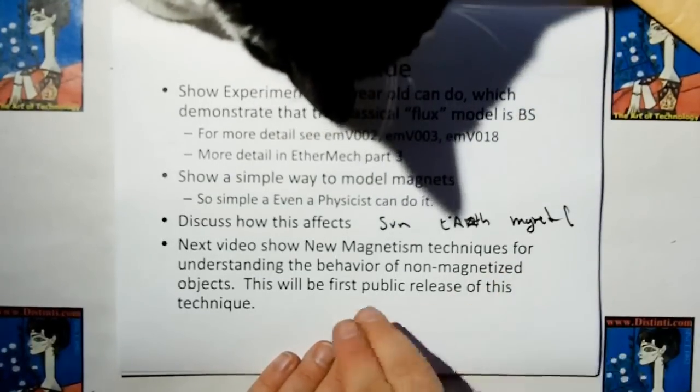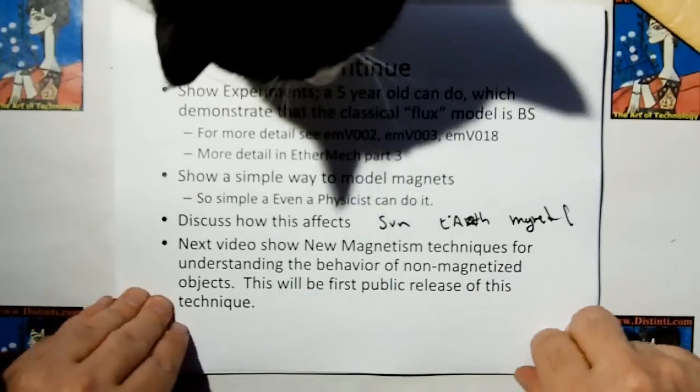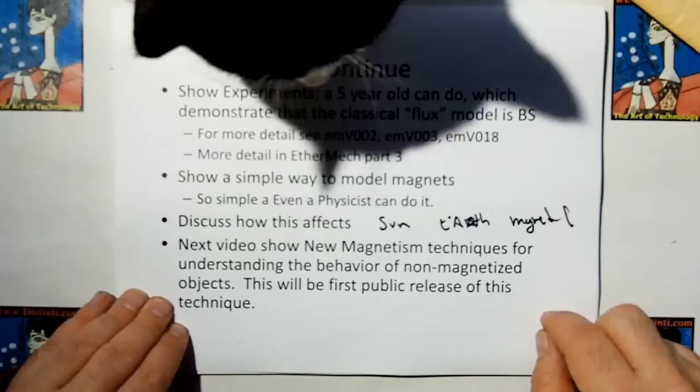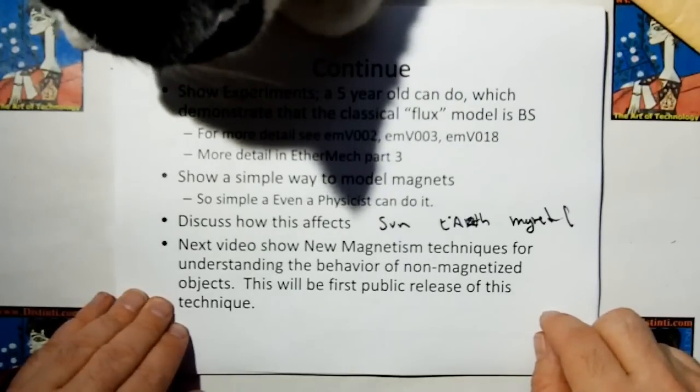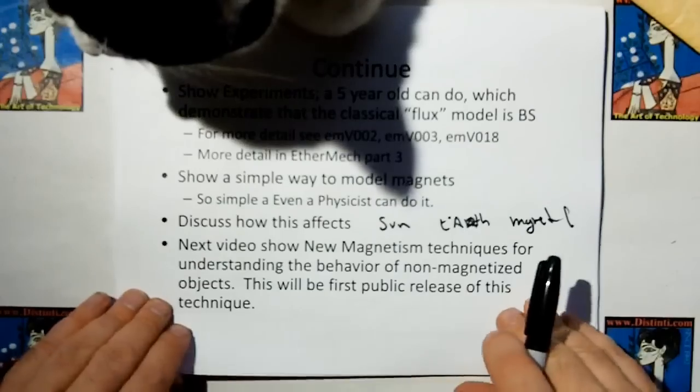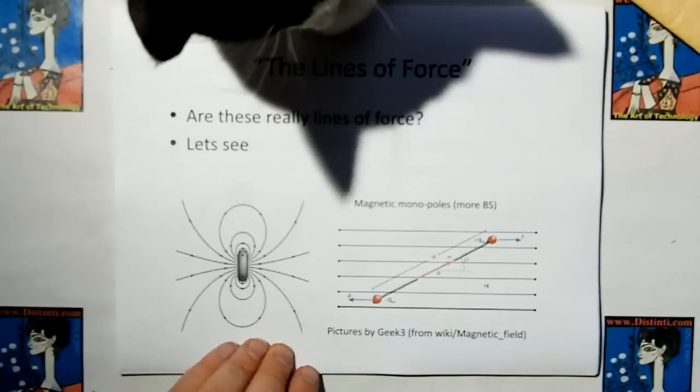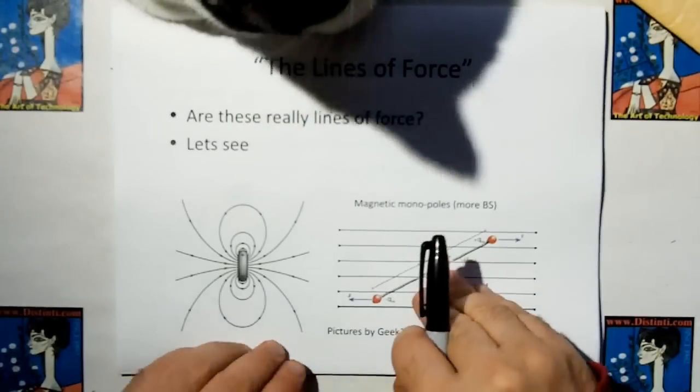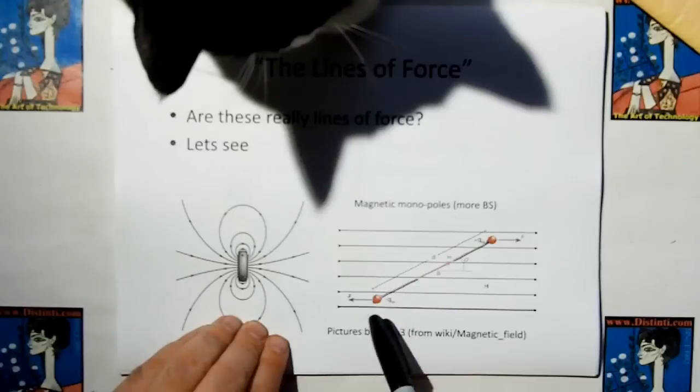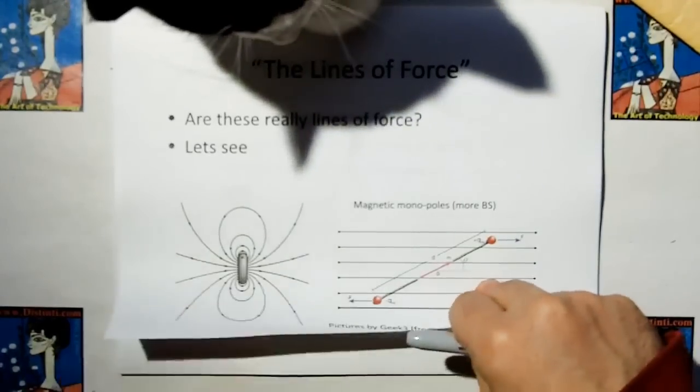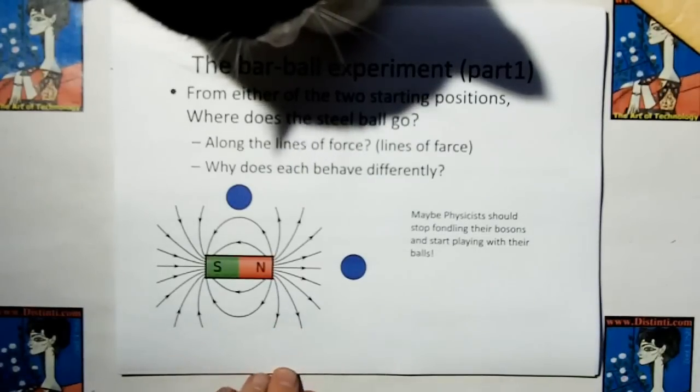Later, we're going to show a simple way to model magnets, so simple even a physicist can do it. And we're going to show how this affects modern scientific thinking about other things, which include the sun and the Earth's magnetic field. In the next video, we're going to show new magnetism techniques for understanding the behavior of non-magnetized objects. It's similar to the method of images for electrostatic charges. So let's explore the lines of force. I love this thing, because it looks like they came up with these things called magnetic monopoles. That's a lot more baloney.